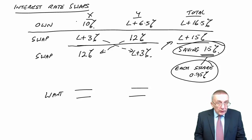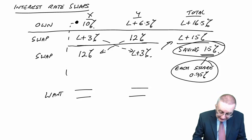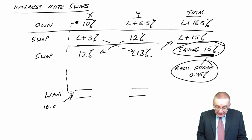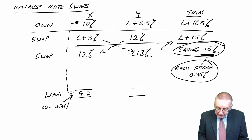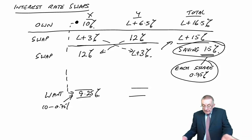Now, X, remember, wants to borrow fixed. If they borrow themselves, they'll pay 10. We found a way of saving them money. And so, we want them to end up paying 0.75% less. 9.25. If we end up with that result, then for X, we've achieved the objective. Own borrowing, they pay 10. Here, get that saving. They only pay 9.25. They're happy.